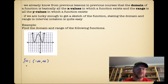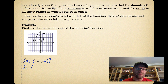Now the range is a little bit different. The range is your y values. On this graph, you can see that it comes down and touches the x-axis, so that's a minimum value of zero. The arrows indicate that it goes on forever, so it equals zero but does not equal infinity because it cannot equal infinity.